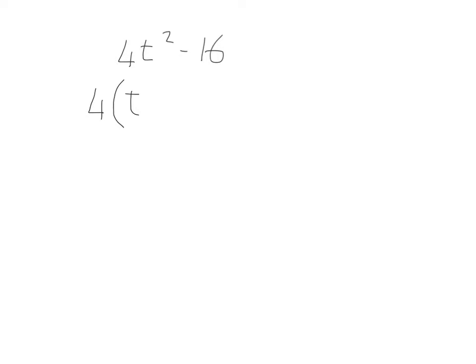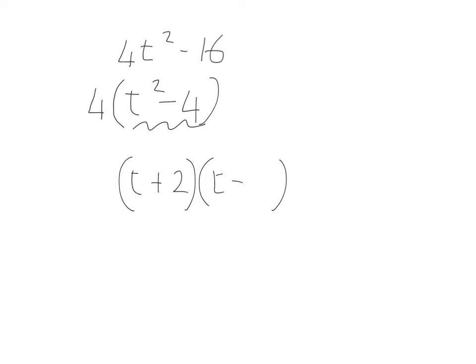So that's 4 bracket t squared minus 4. It's now a difference of two squares with t squared minus 4: bracket with a plus, bracket with a minus. Square root of t squared is t, square root of 4 is 2, and there's a 4 at the front. Final answer: 4 bracket t plus 2, bracket t minus 2.